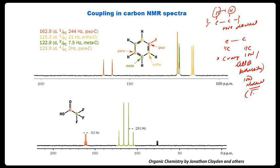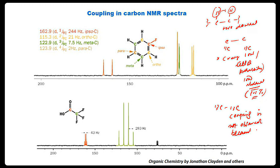Low abundance — 1.1 percent — is the main culprit. That's why we do not observe 13C–13C coupling. Saying we do not observe coupling in carbon at all is the wrong statement. There is definitely coupling, but 13C–13C coupling is not observed because of low abundance of 1.1 percent.